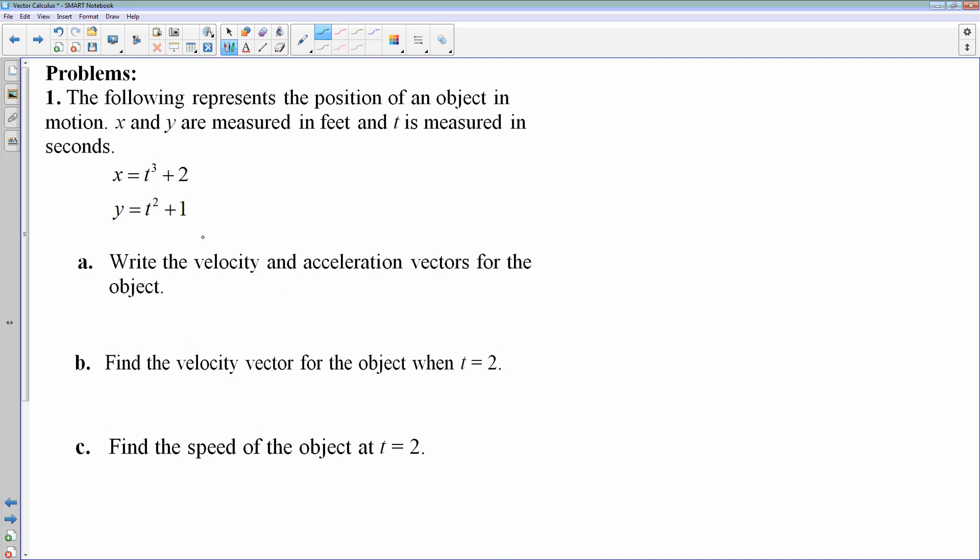Find the velocity and acceleration vectors for the object. Well, velocity is simply the derivative of position. So my velocity vector is going to be the vector, and we simply do the derivative of x and the derivative of y. So that would be ⟨3t², 2t⟩. There's your velocity vector. Easy enough, right?